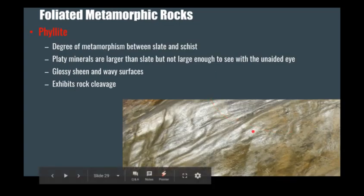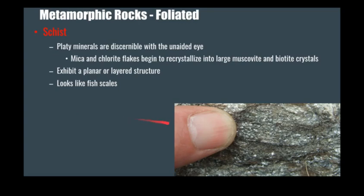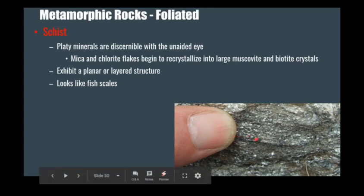Here's a picture of phyllite, and you can see that sheen — that catfish skin-like texture. This is between a slate and a schist, a low to medium-grade metamorphic rock. The platy micaceous minerals are a little bit larger than what you'd see in a slate, but not large enough to see without a petrographic scope. Here's a schist with a thumb for scale. You can see little individual mica grains glittering, very much like sequins or a glittery rock. These will often exhibit planar or layered structures, expressing their foliation.